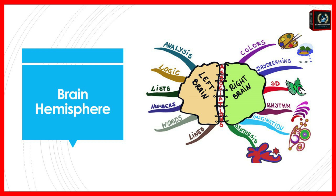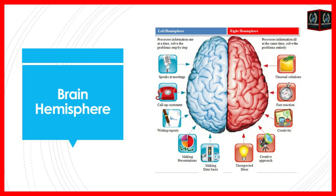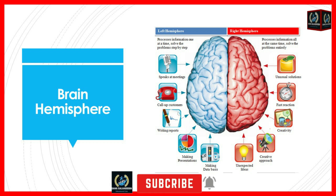There is a Schulte board on the screen — you can see different numbers tabulated based on random arrangement. Schulte tables are tables with randomly arranged characters, usually numbers or letters, used to check and develop the speed of visual search in a specific order. These tables were originally developed by the German psychotherapist Walter Schulte, and later began to be used for training peripheral visual perception, which is useful for developing speed reading skills.